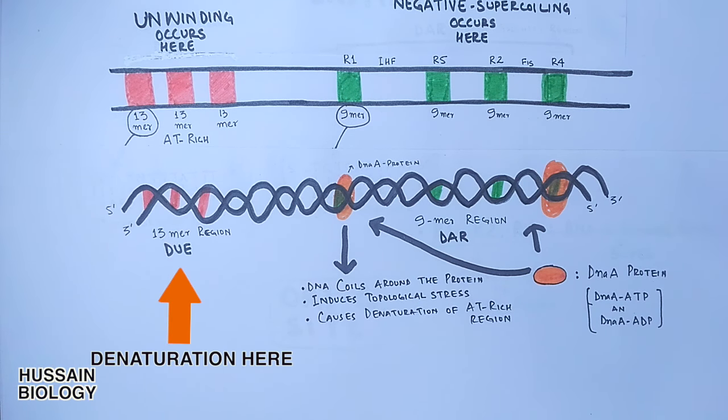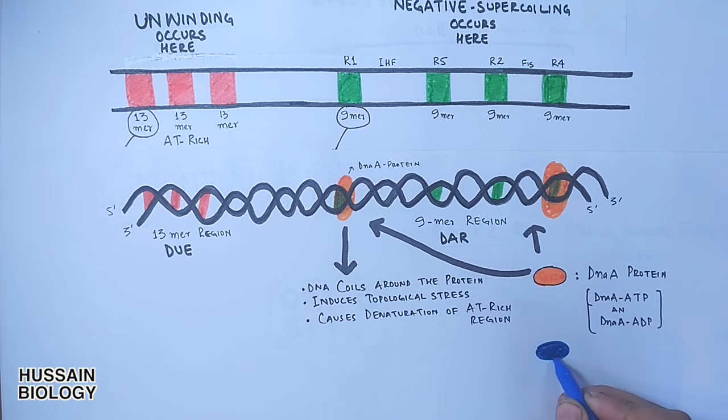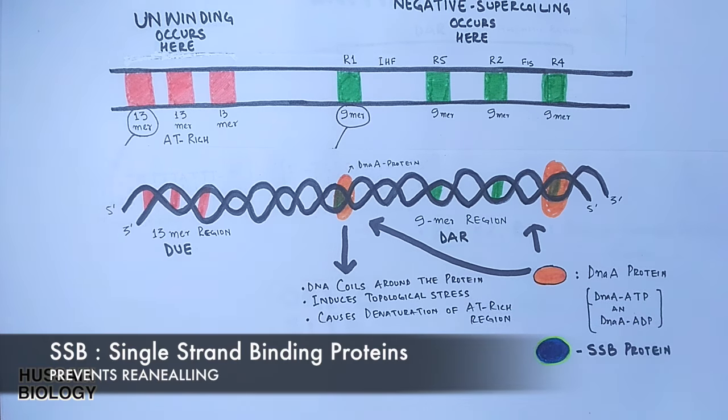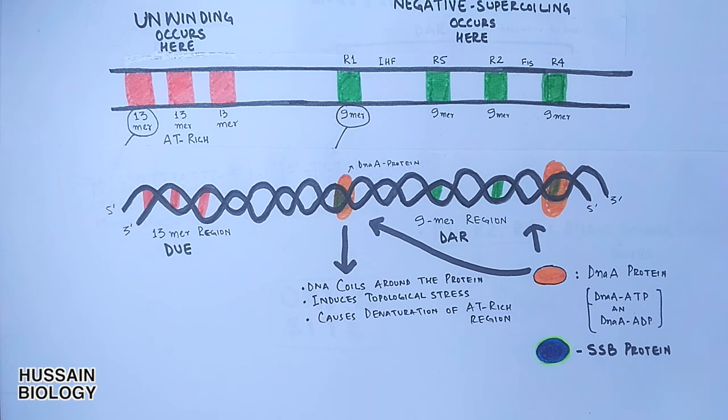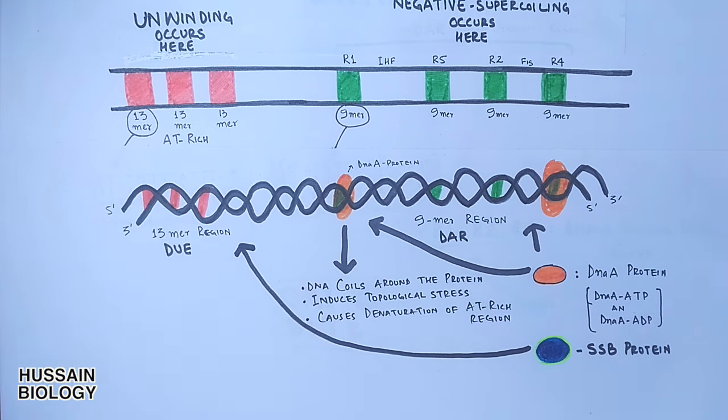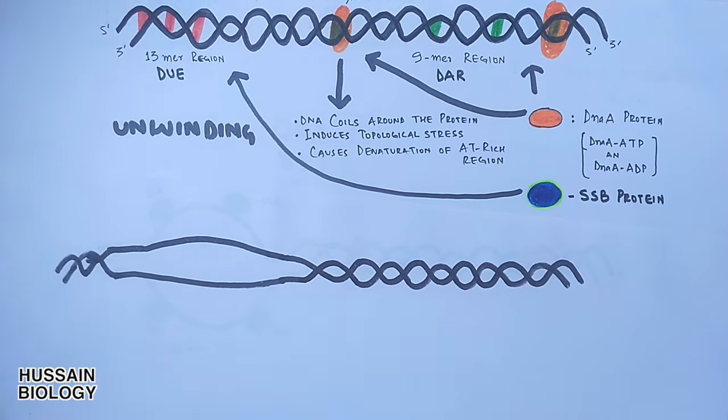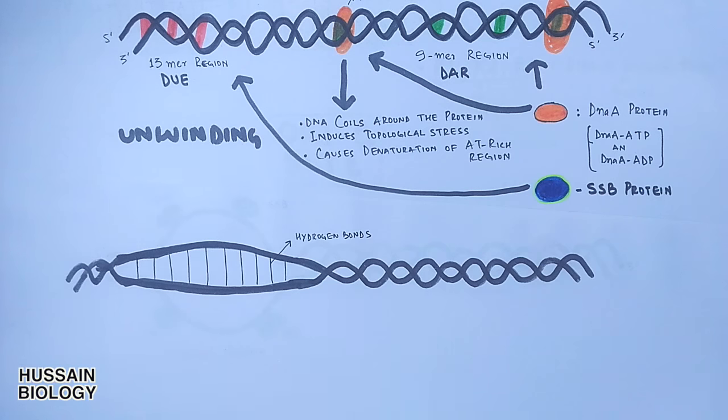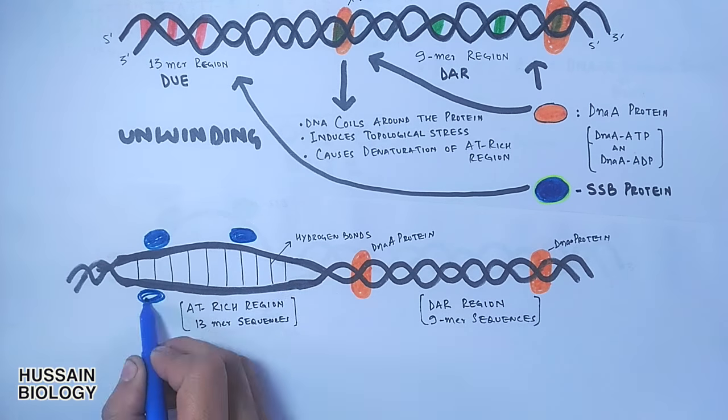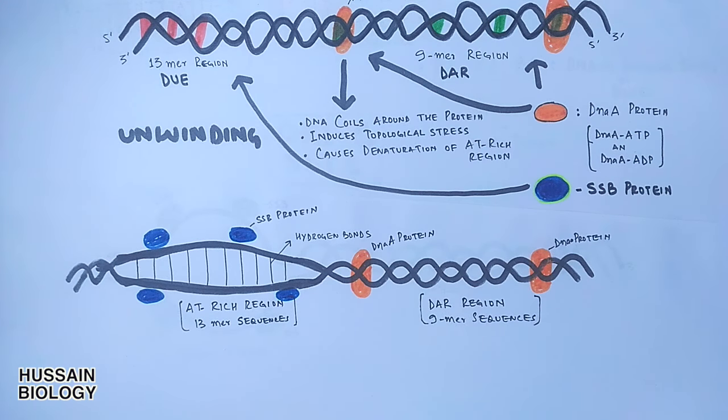The second step is binding of SSB proteins to the DNA strands. SSB proteins either bind prior to helicase binding or after helicase binding. This concludes the unwinding part. Now we have hydrogen bonds between the bases of DNA strands. In order to separate the DNA strands completely and give room to the DNA polymerase enzymes for replication, those hydrogen bonds need to be broken first.